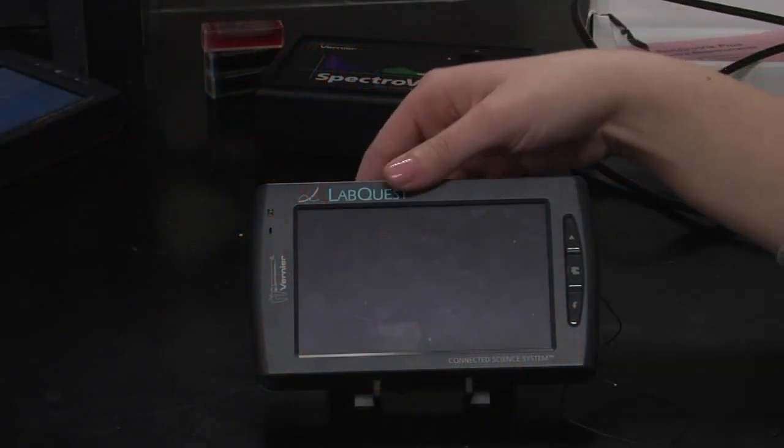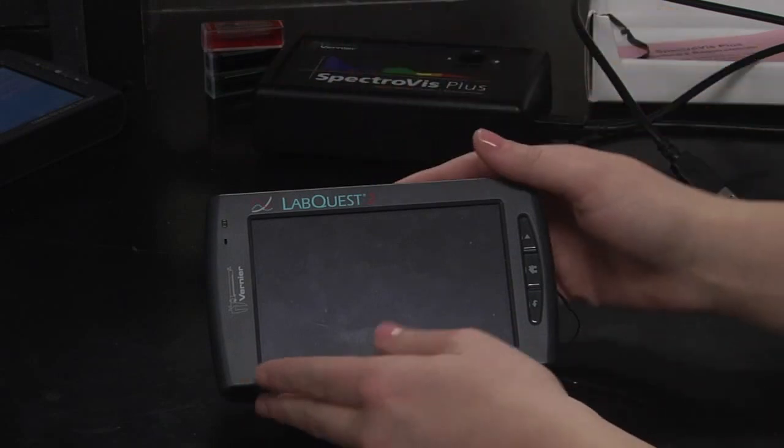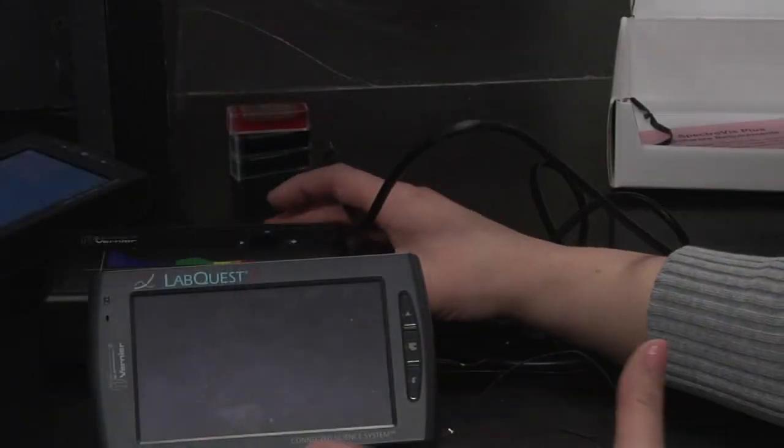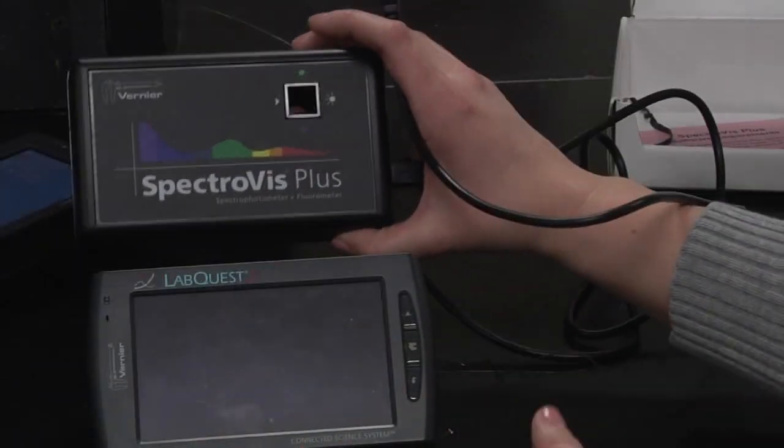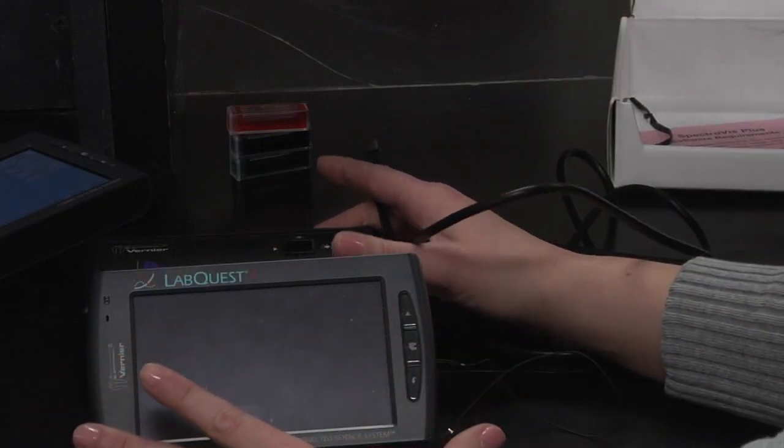Okay, so this is your LabQuest 2. You'll be using this to take all of your measurements today. To turn it on, there's a button up here on the top. Press that, but first you want to make sure your SpectroVis is plugged into your LabQuest, because without it your LabQuest won't know what to measure.